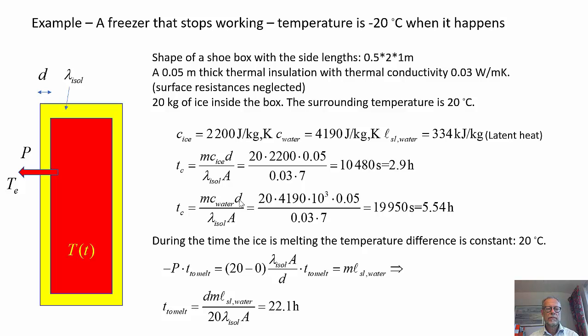So the characteristic time when we have ice is 2.9 hours and when we have water it is 5.54 hours. During the time the ice is melting, the temperature difference is constant, 20 degrees. So we can write down an equation easily, how long time it takes to melt. The effect, which is constant during this time, times the time is equal to the change in the latent heat, which is M times L here in the formula. And that is actually 22.1 hours.